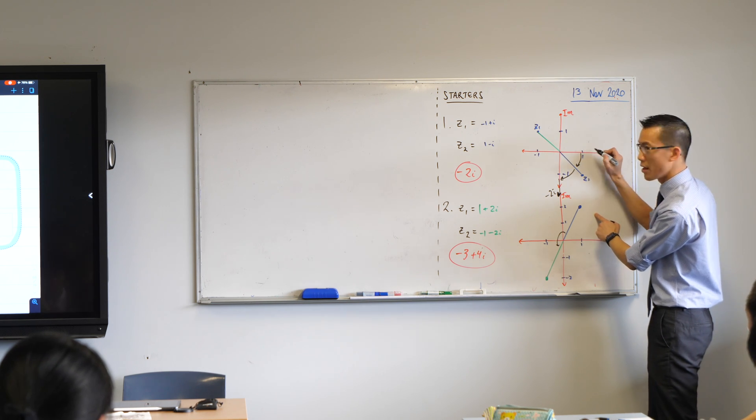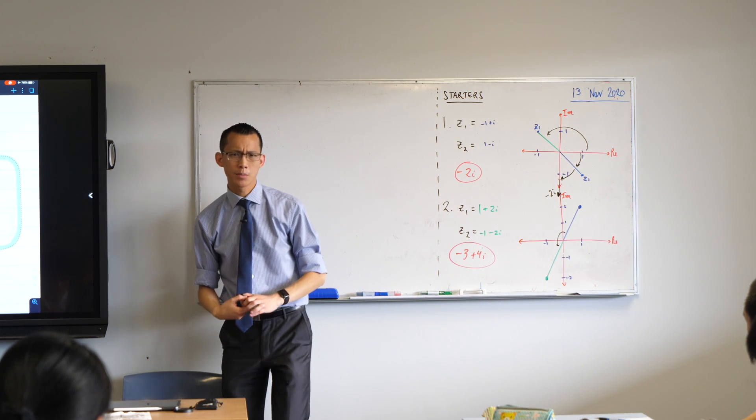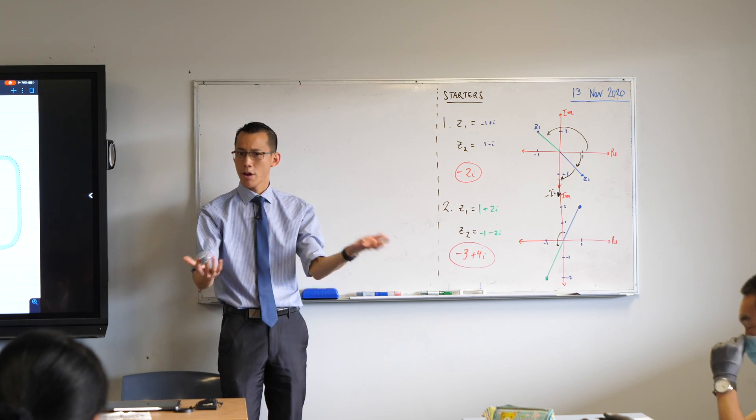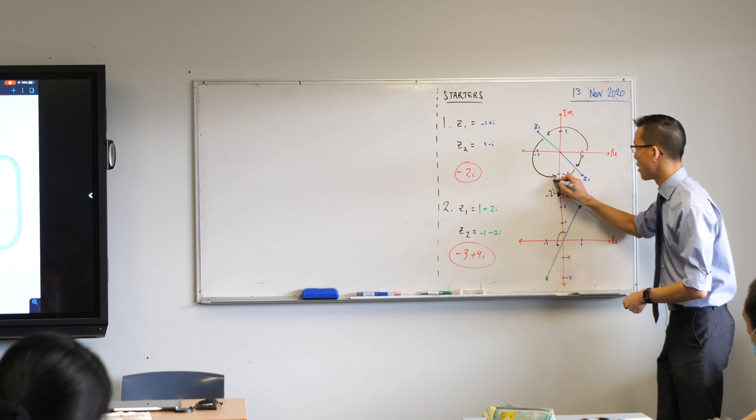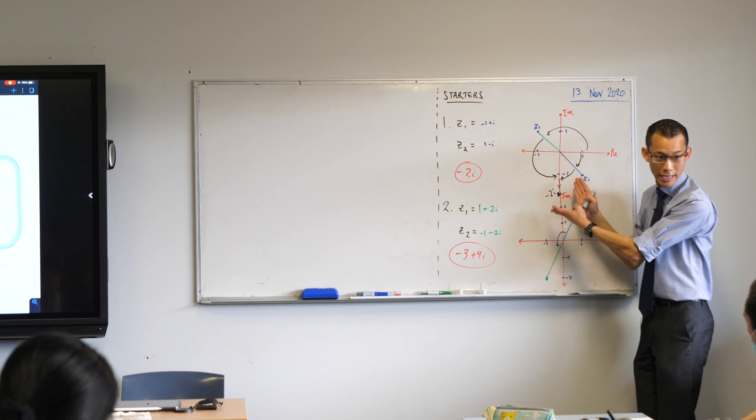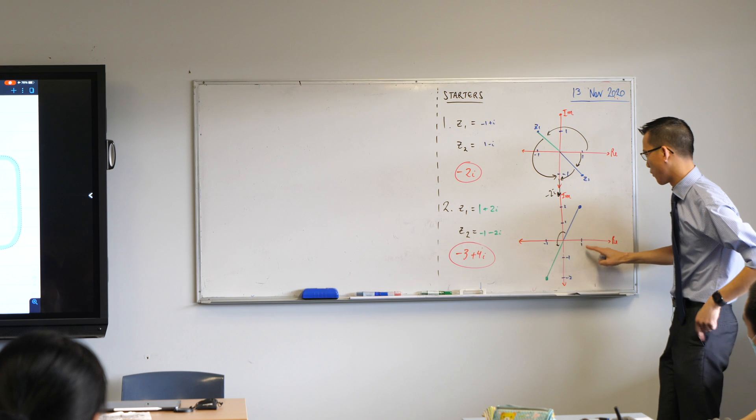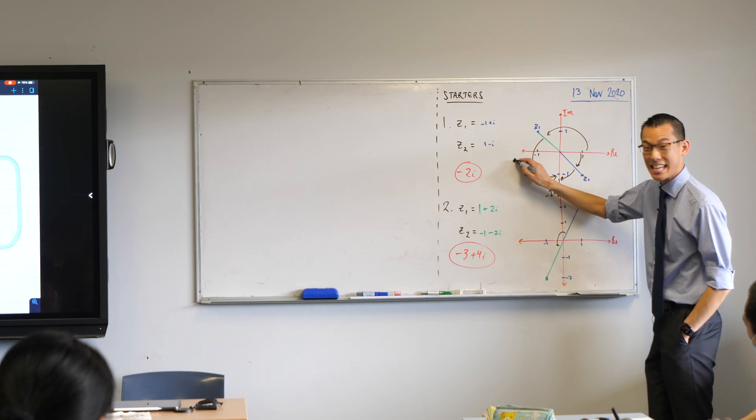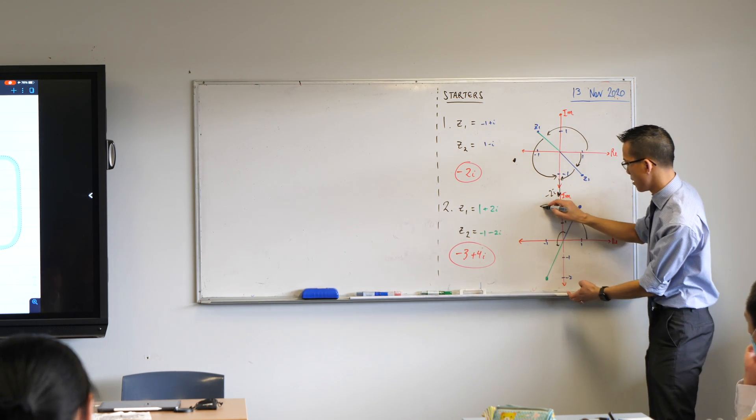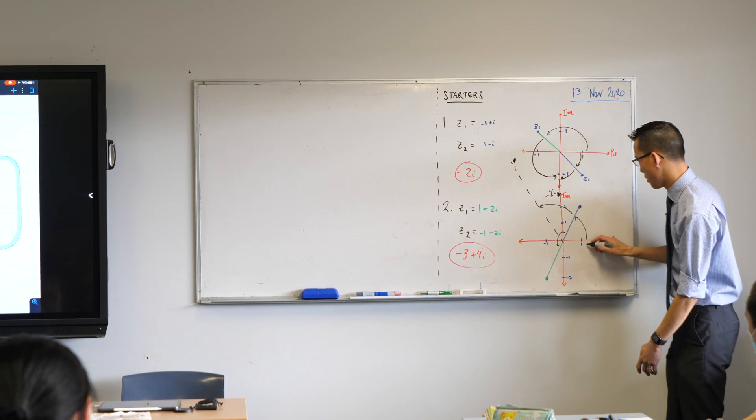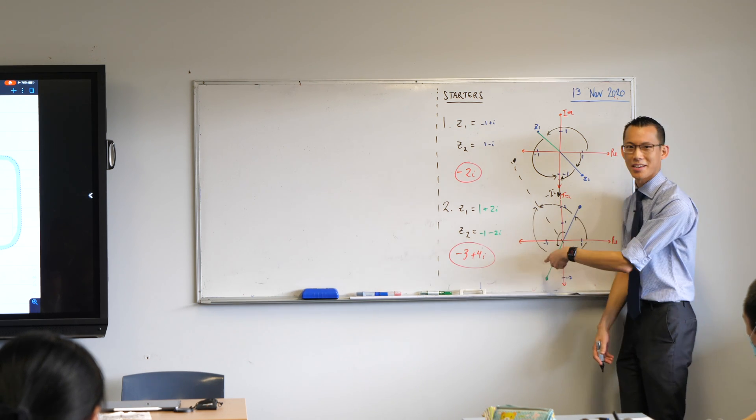If you go from the positive real axis and go around that way, what's the principal argument of z1? Three pi over four. So you can see if I went anti-clockwise another three pi over four, you still get to the negative imaginary axis. You can see the same thing for minus 3 plus 4i. The fastest way is going anti-clockwise, or you could go clockwise.